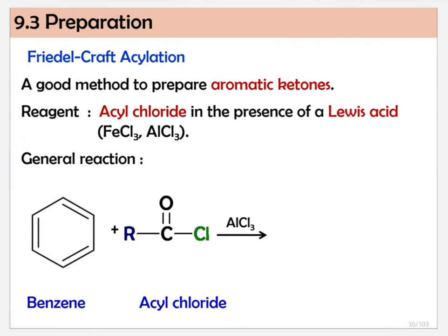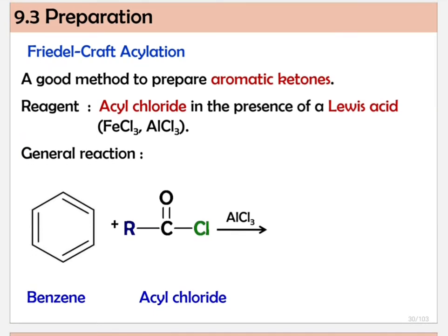So we have settled the second reaction. Hopefully, since we are revisiting content you've already gone through before, this should be something you are familiar with. The last method is Friedel-Crafts acylation. This can only be used to produce aromatic ketones — you will not get an aldehyde from Friedel-Crafts acylation. You will only get a ketone, and it is aromatic because of the benzene ring.